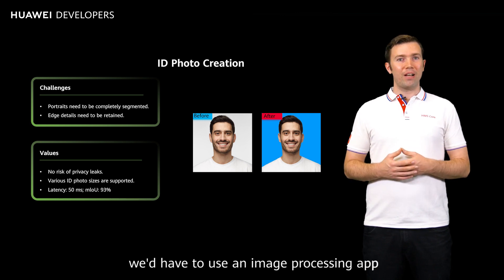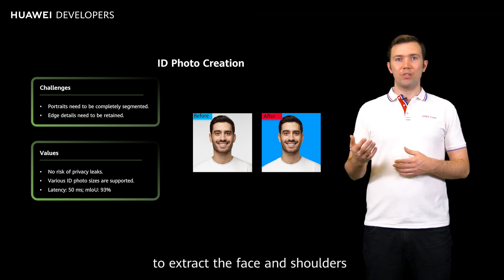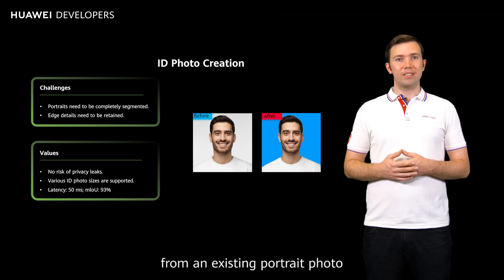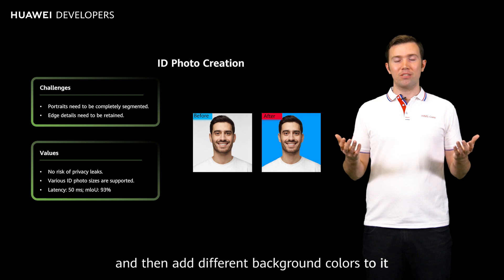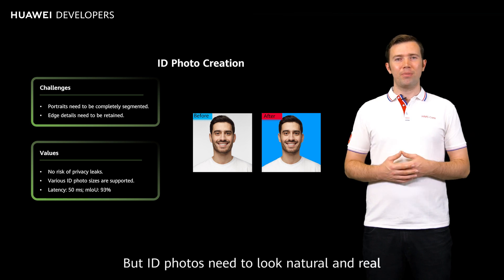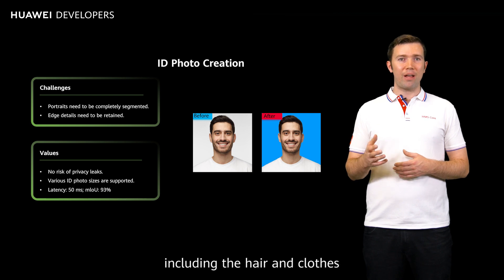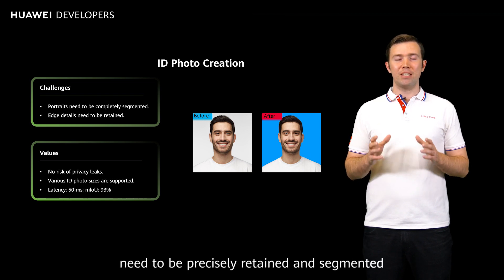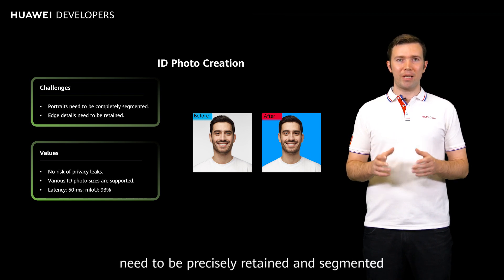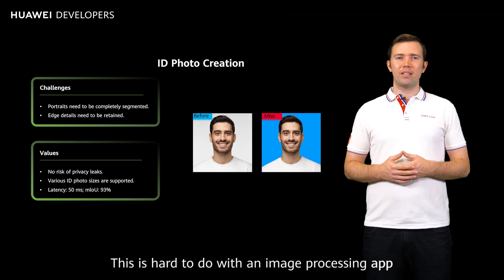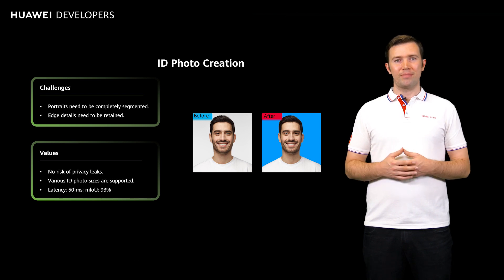Usually, we'd have to use an image processing app to extract the face and shoulders from an existing portrait photo, and then add different background colors to it. But ID photos need to look natural and real, and the edges of the person, including the hair and clothes, need to be precisely retained and segmented. This is hard to do with an image processing app.